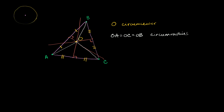Similarly, if you start with the center at O and you say all of the points that are the circumradius away from O, it will uniquely identify a circle, and that circle will contain the points A, B, and C, because those are the circumradius away from O, so they are included in that set. So the circle would look something like this.